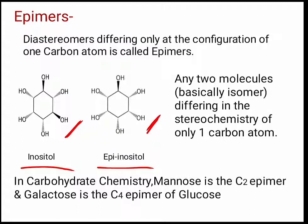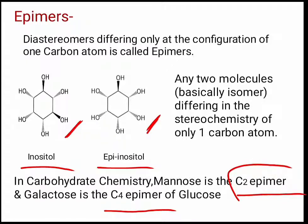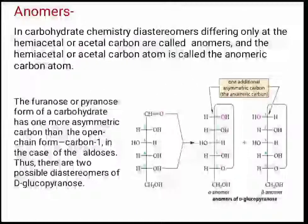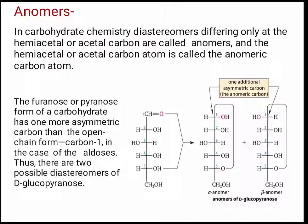In carbohydrate chemistry, mannose is the C2 epimer and galactose is the C4 epimer of glucose. You must remember this — it is very important and you can get this type of MCQ in any kind of exam: mannose is the C2 epimer and galactose is the C4 epimer of glucose.